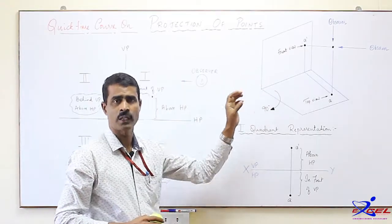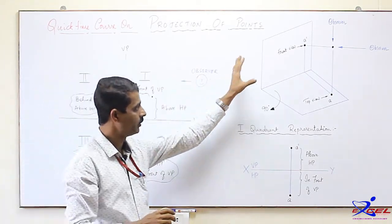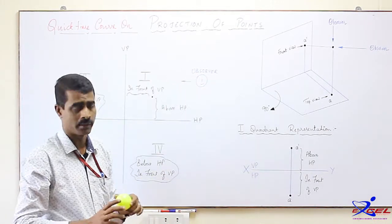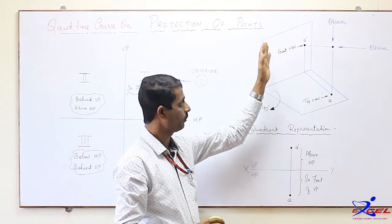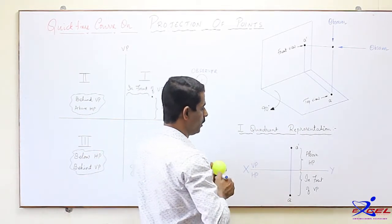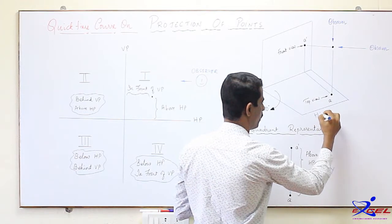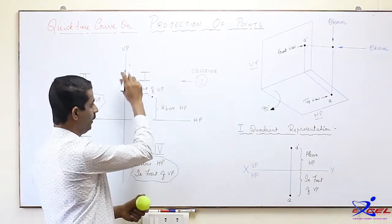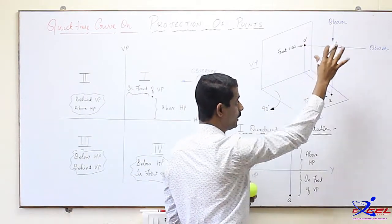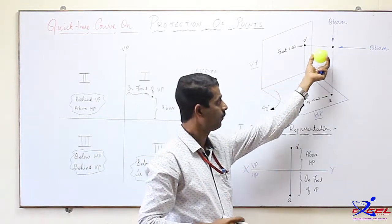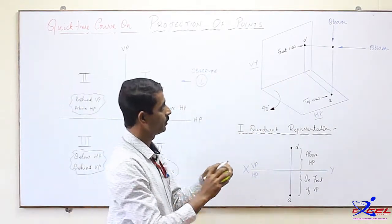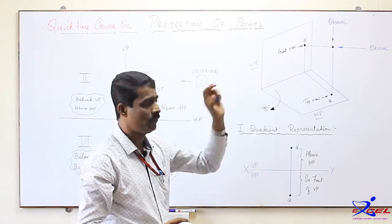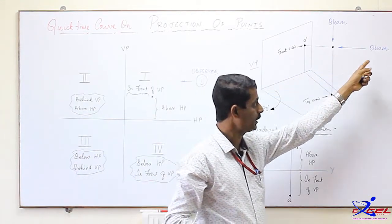Now we shall focus on the first quadrant. I have drawn a perspective view so that we can understand what is meant by the first quadrant. The first quadrant is defined by the horizontal plane and vertical plane. This is HP and this is VP. The point is in this particular space — in the first quadrant — a certain mm above HP and a certain mm in front of VP. The observer is on the right-hand side.